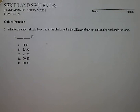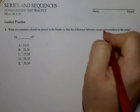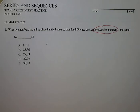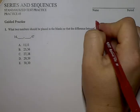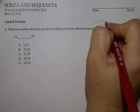In sequence practice number five, what two numbers should be placed in the blanks so that the difference between consecutive numbers is the same? Key here is consecutive numbers. What does it mean to have consecutive numbers? That's like how we count: one, two, three, four, and so on.